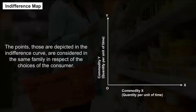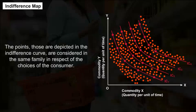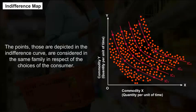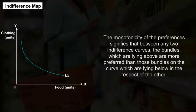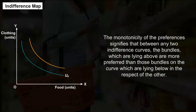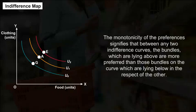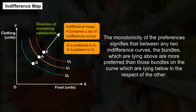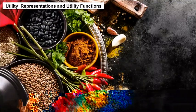Indifference map: Points depicted on the same indifference curve are in the same family with respect to the consumer's choices. The monotonicity of preferences signifies that between any two indifference curves, the bundles lying above are more preferred than those lying below.